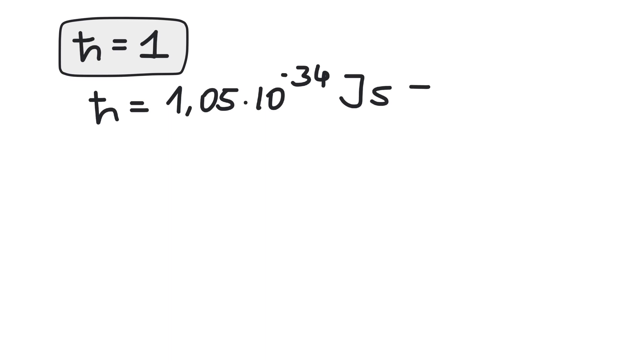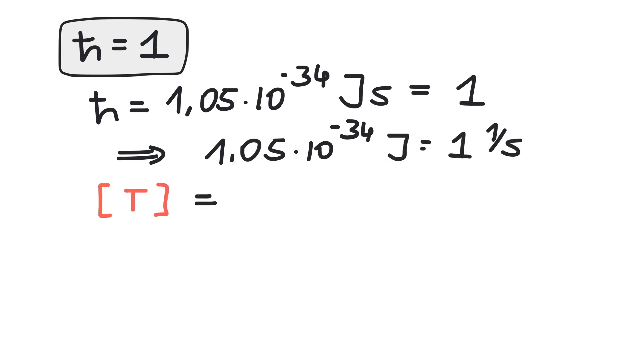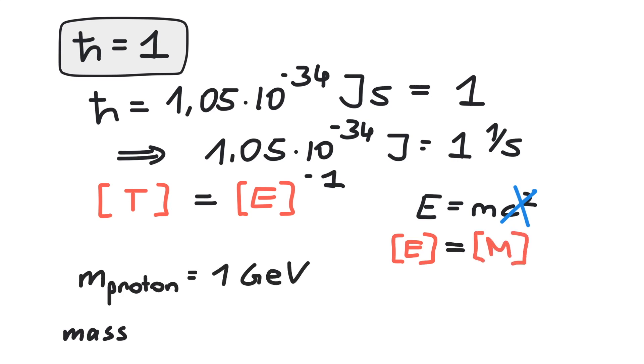Planck's constant is given in units of energy multiplied by time. Setting h-bar equal to 1 means setting energy and inverse time on equal footing. Now you can express your height in inverse energy. And since energy is kilograms times velocity squared and, with c equals 1, velocities do not carry units anymore, kilograms can be expressed by energy. Now it's clear how we can express the mass of a proton with a unit of energy, that is GeV.